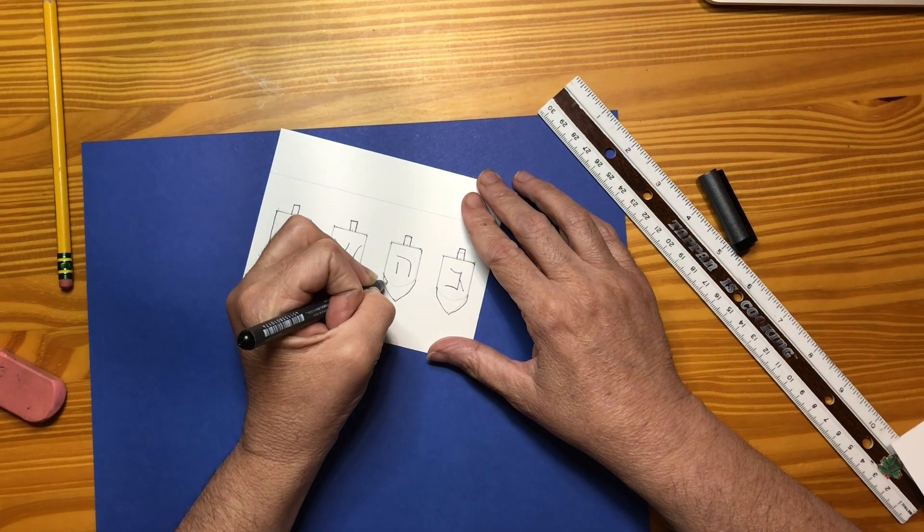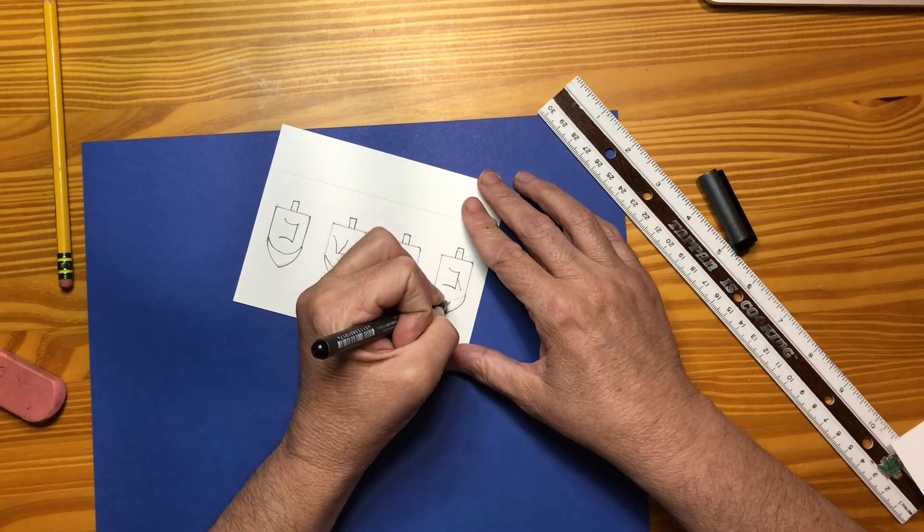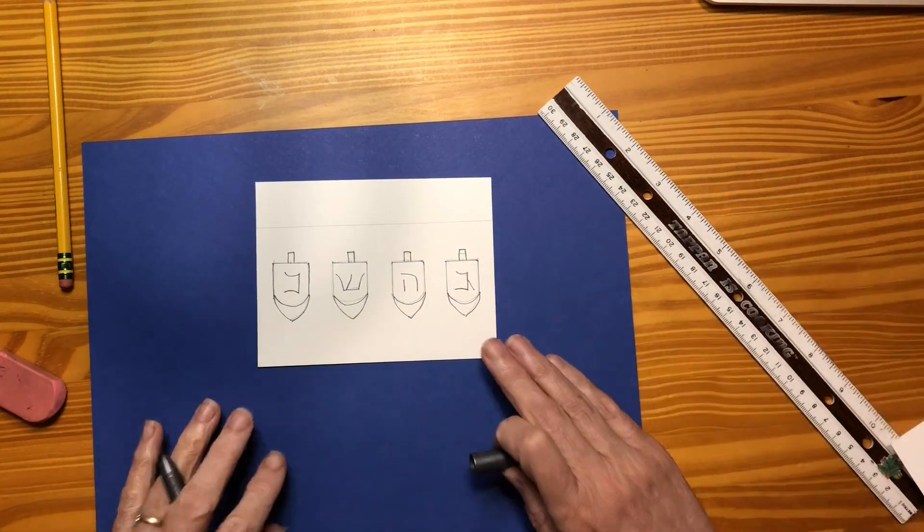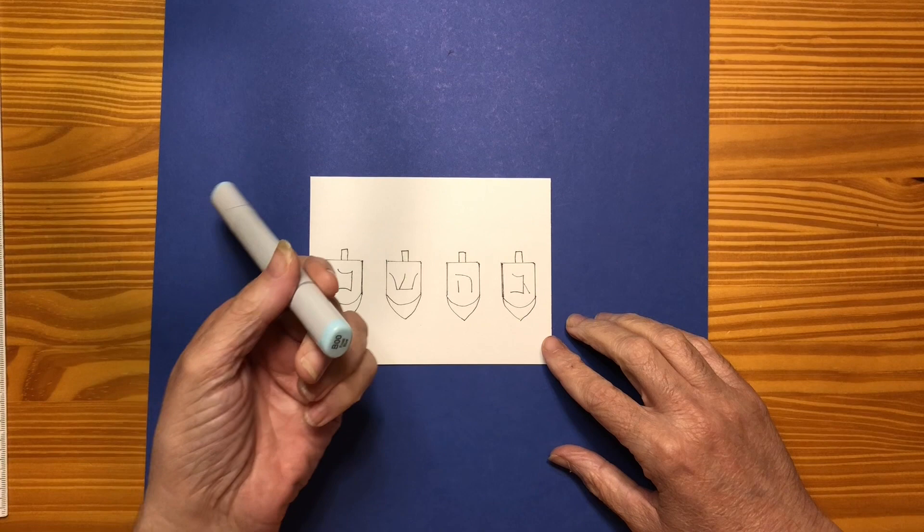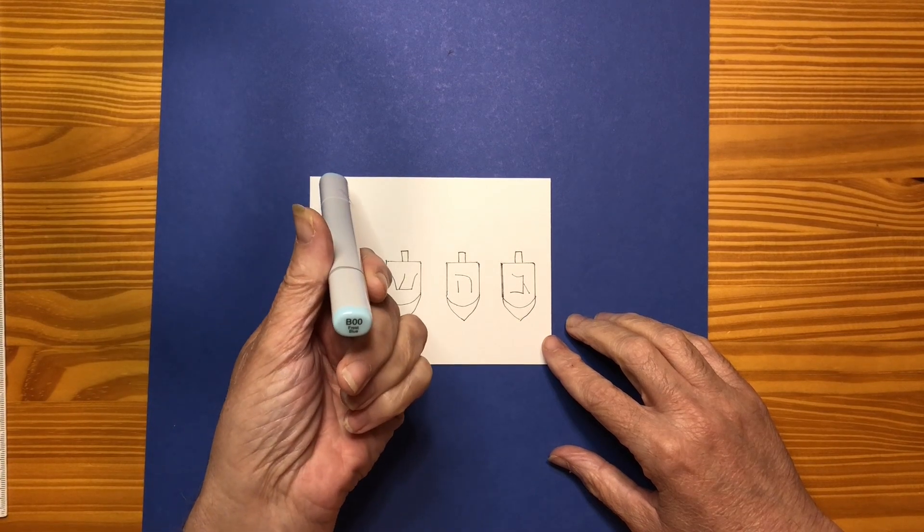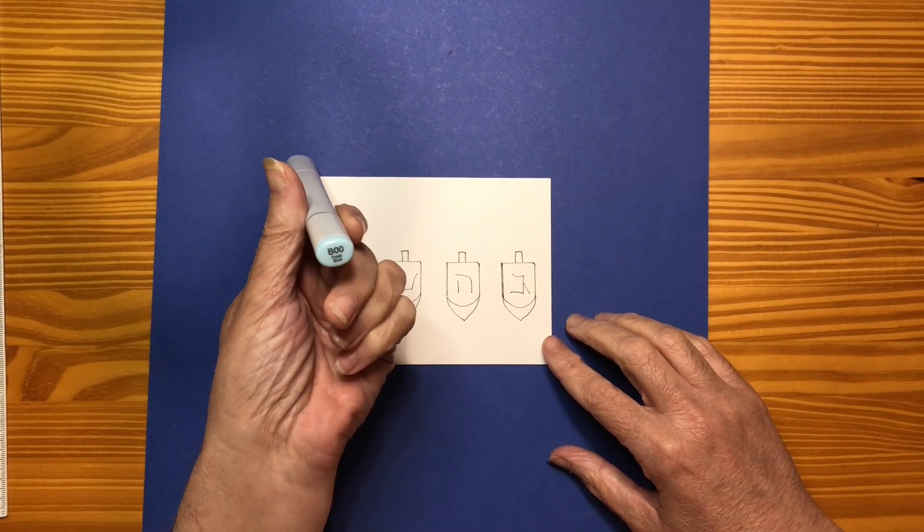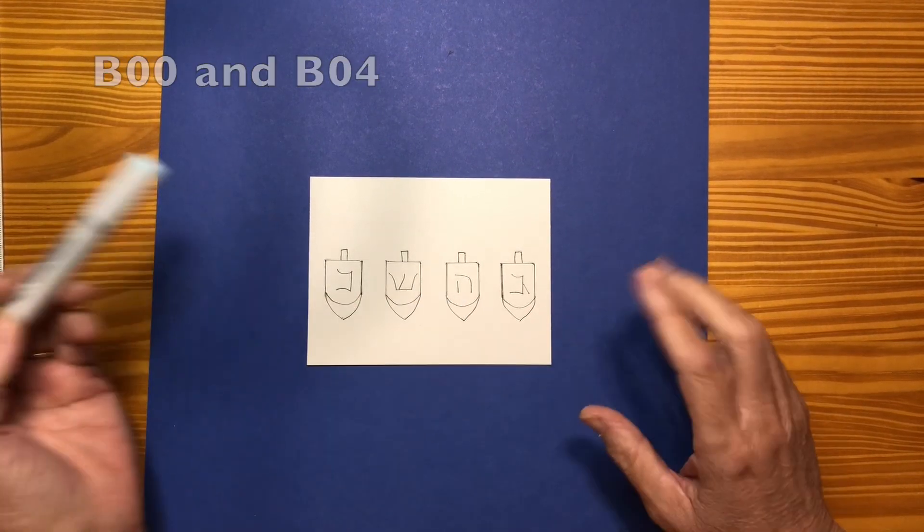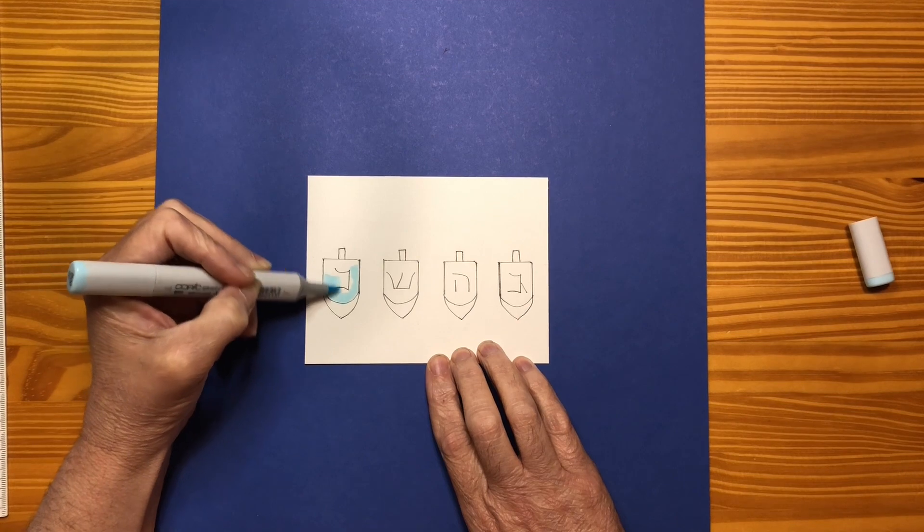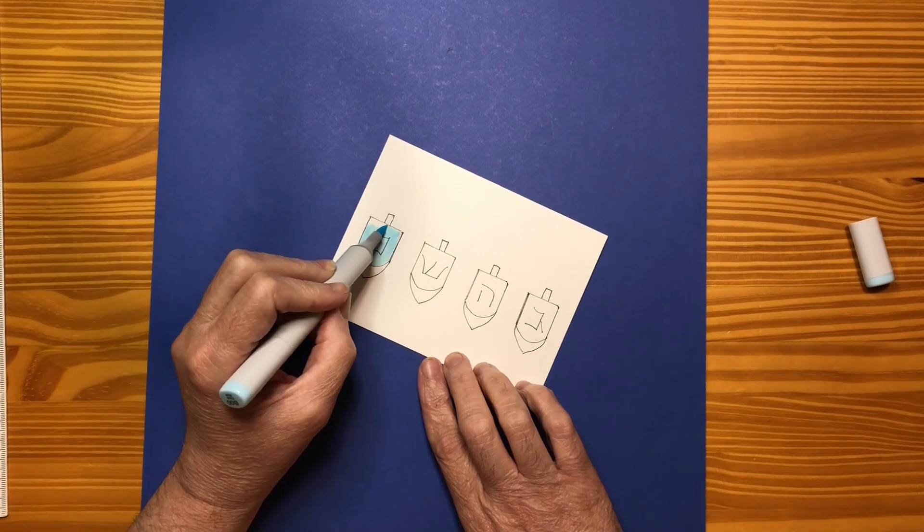Let's go ahead and start to color these in with the Copic and make them to where they're the permanent things on there. I'm going to color it in Copic B, which is fresh blue. I think I'm just going to go ahead and just color the whole thing in blue and then I'll do my flickering. Let's get to that.